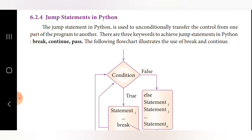Jump statements are used to transfer the control unconditionally from one place to another. There are three types of jump statements in Python: break, continue, and pass. These three are keywords. The following flowchart illustrates the use of break and continue statements.